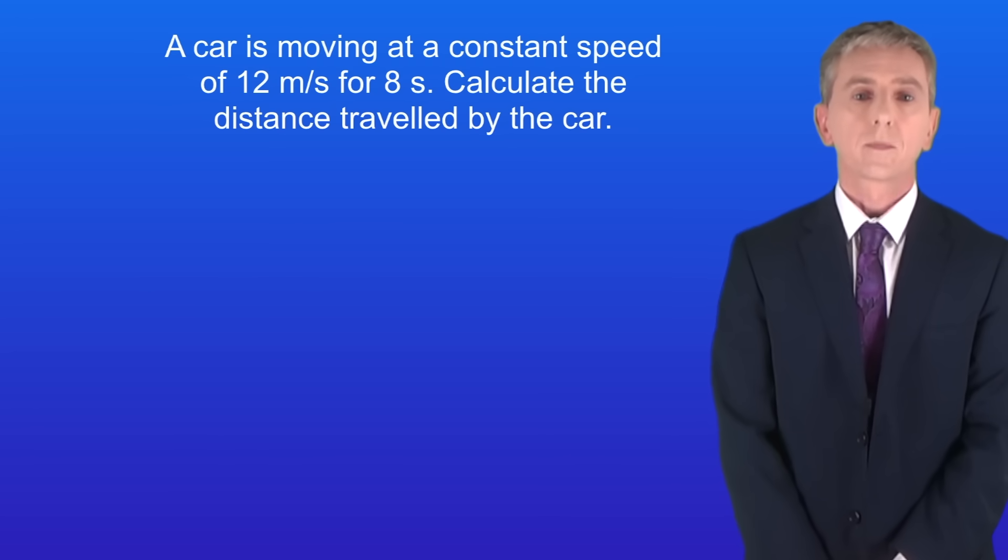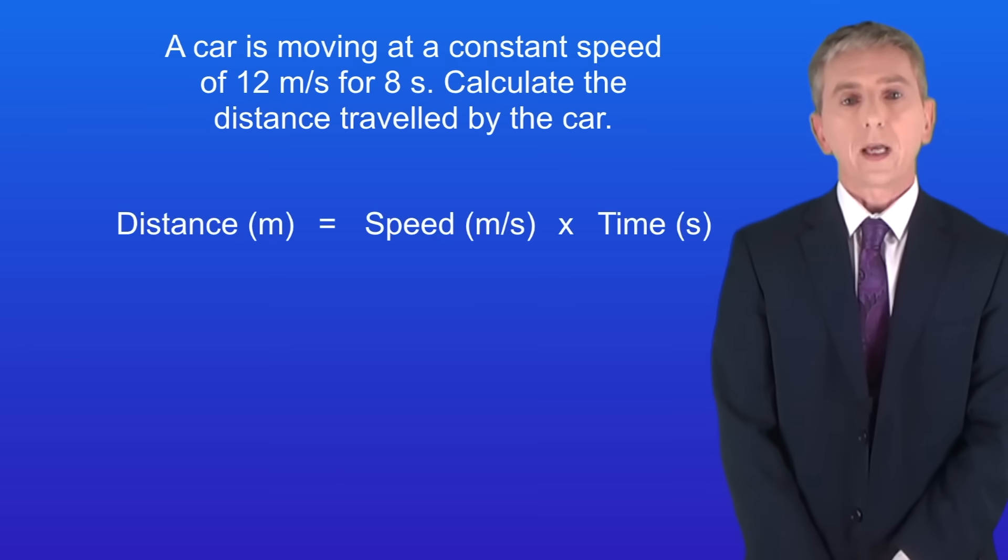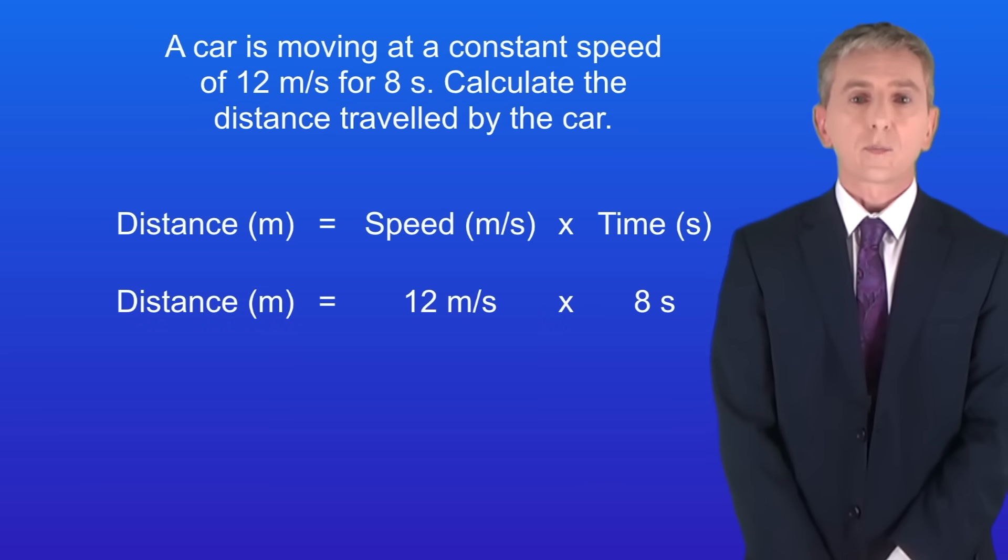So here's a question for you. A car is moving at a constant speed of 12 meters per second for 8 seconds. Calculate the distance traveled by the car. So pause the video now and try this yourself. Okay, to find the distance we multiply the speed by the time. In this case the speed was 12 meters per second and the time was 8 seconds. Multiplying these together gives us a distance of 96 meters.